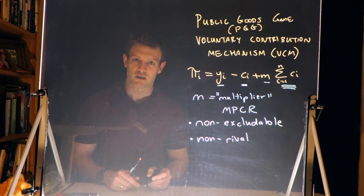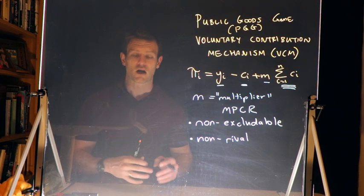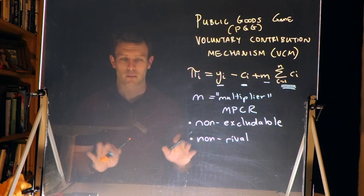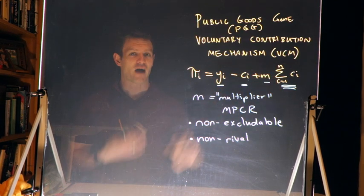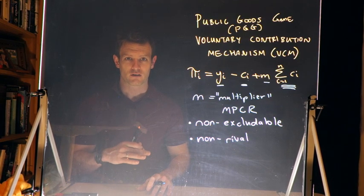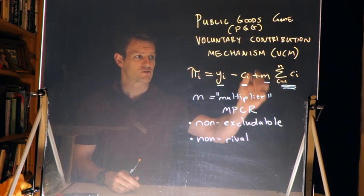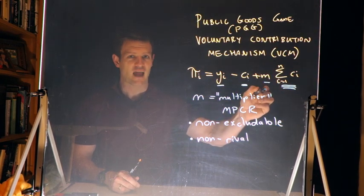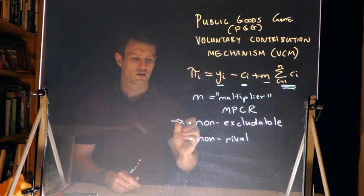Now what do these two things mean? If something is non-excludable, it means that a player in the game can't stop anyone else from accessing the public good. Now notice the structure of this payoff function here. If I am player 1, and I don't contribute anything, no other player can stop me from accessing the benefits of what they have contributed to the public good. I simply get access to it as a consequence of playing. Therefore the benefits are non-excludable.